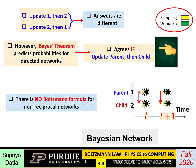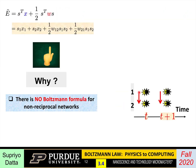So let's talk about these points one by one. The first point is: why is there no energy function for non-reciprocal networks? Well, if you write down the energy function with two neurons, you'll get a set of terms, and you'll notice how W12 and W21 are part of the same term.